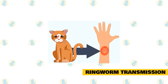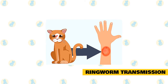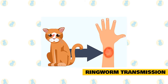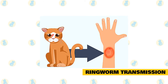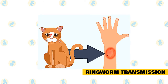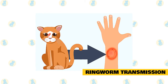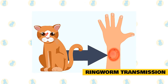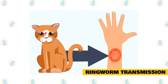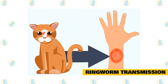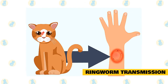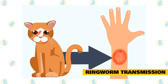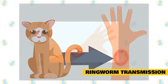Ringworm is contagious and transmission occurs by direct contact with the fungus. It may be passed by direct contact with an infected animal or person, or by handling contaminated objects, or by touching contaminated surfaces. The fungal spores may remain dormant on combs, brushes, food bowls, furniture, bedding, carpet, or other environmental surfaces for many months, reportedly up to 18 months.